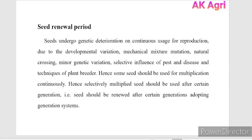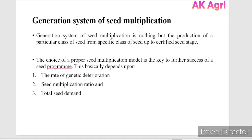Hence, some seed should be used for seed multiplication continuously. Selectively multiplied seed should be used after certain generations, meaning seed should be renewed after certain generations — this is called the generation system. The generation system of seed multiplication is nothing but the production of a particular class of seed from a specific class of seed up to certified seed.